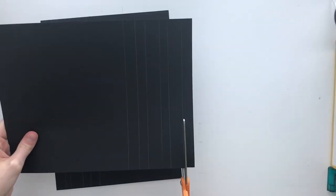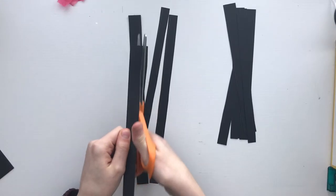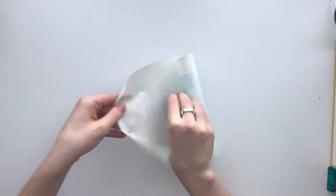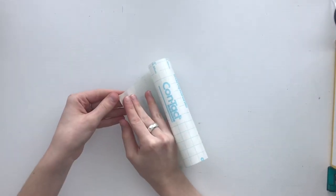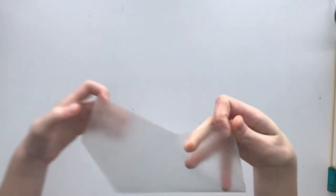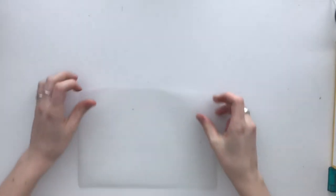Once your strips are cut out, set them aside. This piece of contact paper is about 9 inches by 5 inches, but you can use whatever size you would like. Peel the paper away from the contact paper and lay it on your work surface sticky side up.